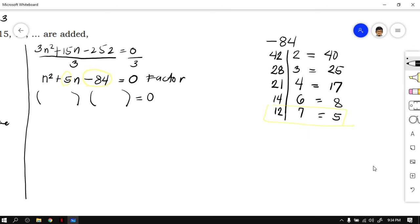So arranging it in a factored form, the factors of n squared is simply n and n. Now let's put 12 and 7. Look at the sign of 5. The sign of 5 is positive. Therefore, the bigger factor will be positive and the lower factor will be negative. By factoring, you will now have n plus 12 quantity n minus 7.